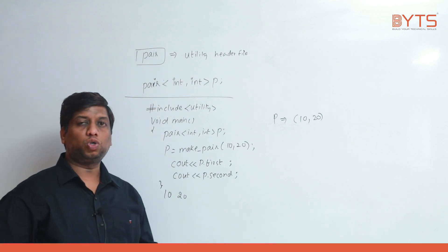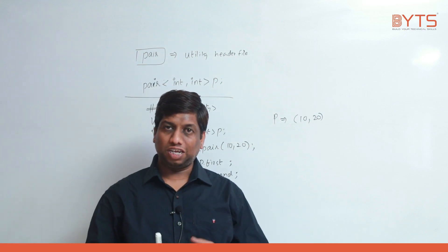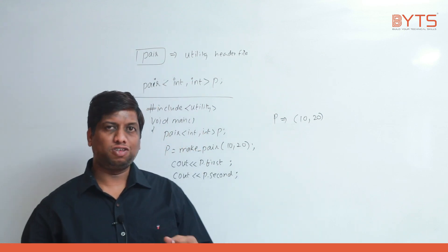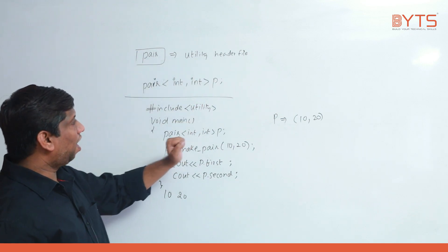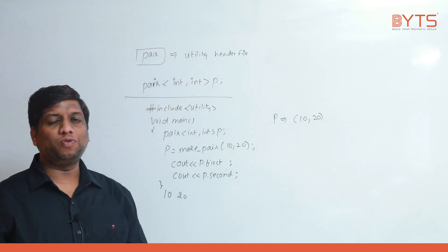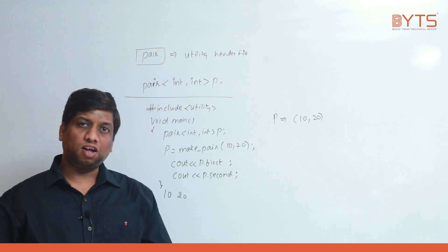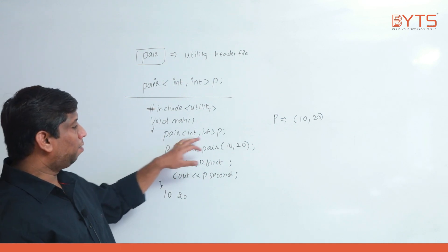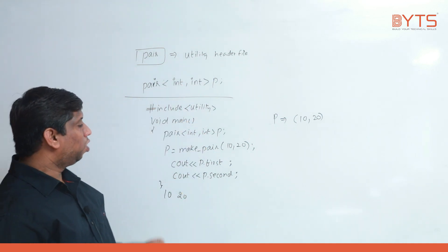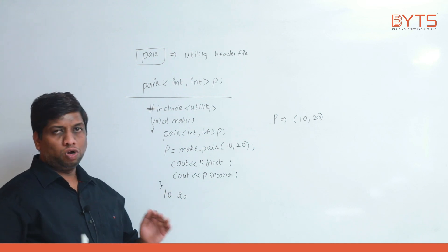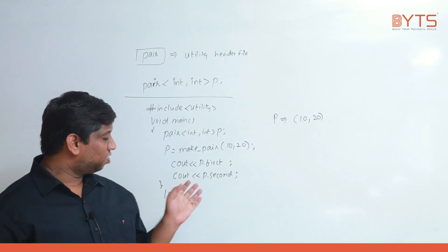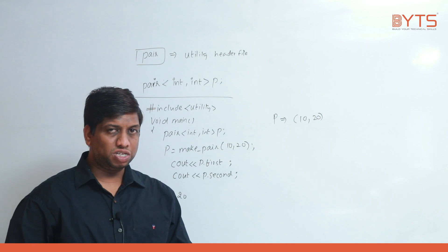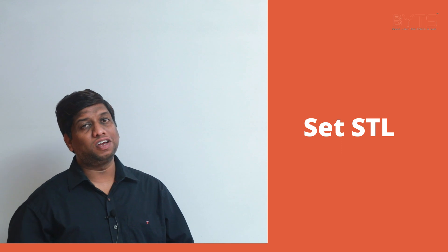Whenever you want to store a key-value pair, we use a concept called pair STL. The pair STL is present in the utility header file, where the first argument is considered as a key and the second argument is considered as a value. Both can be of any type. Use make_pair(10, 20), and p.first gives the first value, p.second gives the second value.